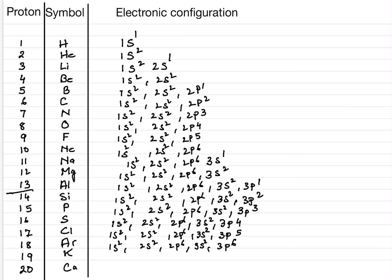For potassium, we can use a shorthand method — a way of writing electronic structure that is much easier. We don't have to keep repeating the same argon configuration. We can just enclose argon in square brackets. So for potassium, we write [Ar] 4S1. Argon represents 1S2 2S2 2P6 3S2 3P6, which is 18 electrons, and then 4S1 gives us 19 total.